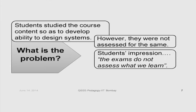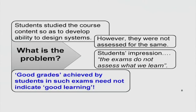Many times we come across this scenario as an instructor — students say whatever we studied didn't appear in the exam, or whatever was asked we didn't study. It is quite possible that the student's preparation was at a higher level but the assessment test was at a lower level. Students might have scored very good grades, but those good grades need not indicate good learning. This is very detrimental to the teaching-learning process. We want good grades to be an indication of good learning.